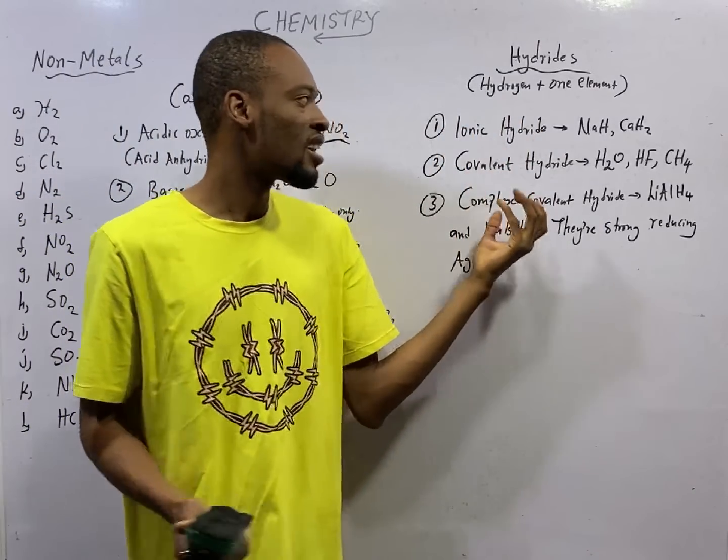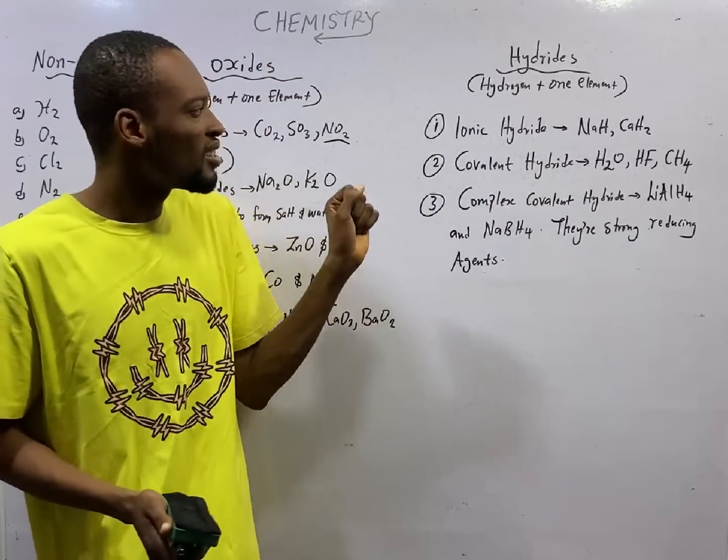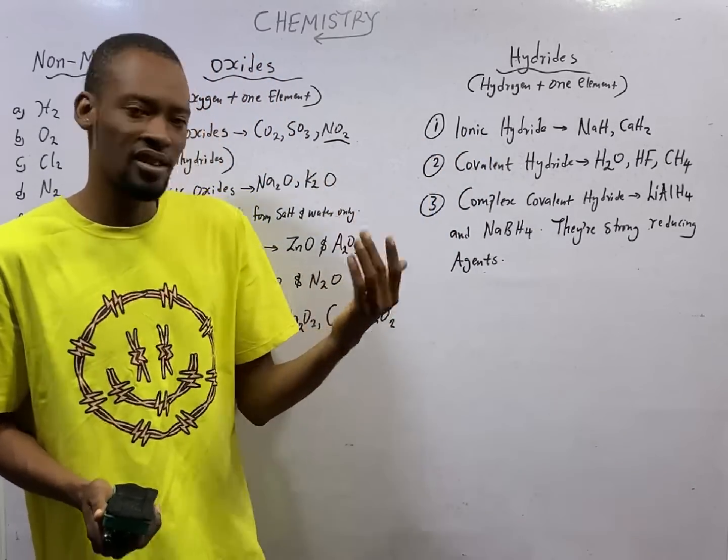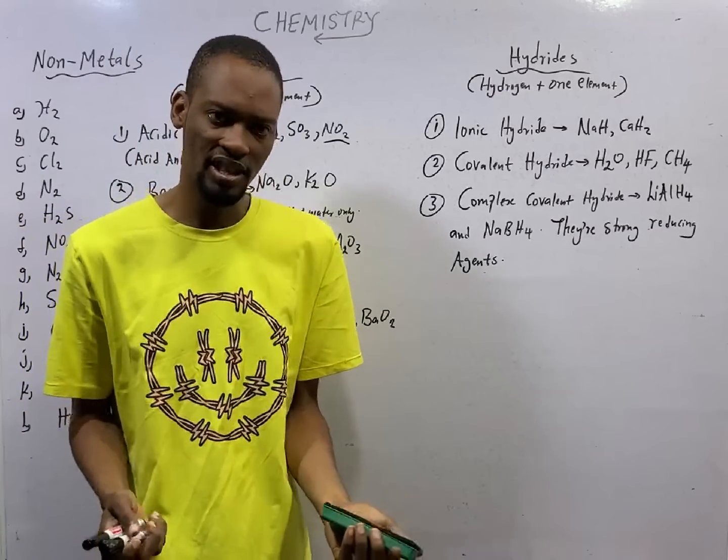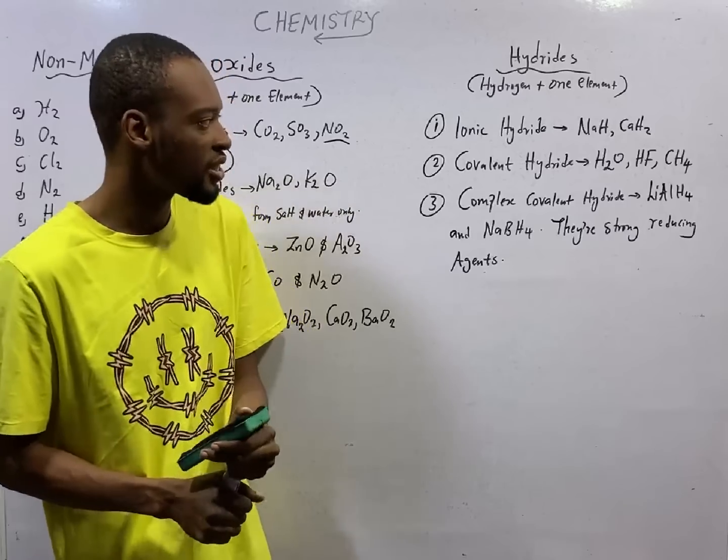Ionic hydrides are hydrides of metals. When hydrogen reacts with a metal, we form ionic hydride. And examples are sodium hydride and calcium hydride.